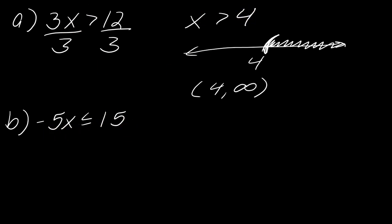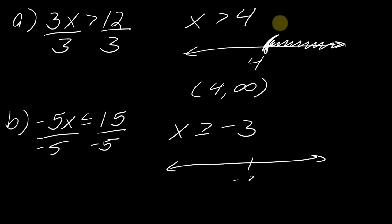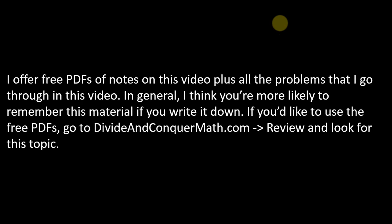Example b shows the one thing you have to watch out for. I've got -5x ≤ 15. I'll divide both sides by -5, but since I'm dividing by a negative number I have to flip the direction of the inequality. So this becomes x ≥ -3. On the number line: closed dot at -3 going right, and in interval notation: [-3, ∞).